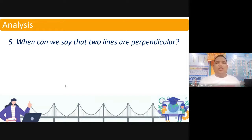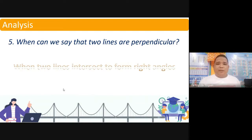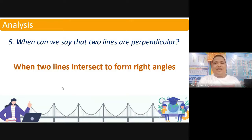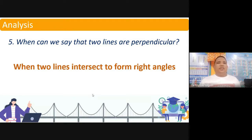When can we say that two lines are perpendicular? Two lines are perpendicular when they intersect with each other to form right angles. Those are the conditions of perpendicularity. Later I will discuss the different specific conditions for determining whether lines are parallel or perpendicular.